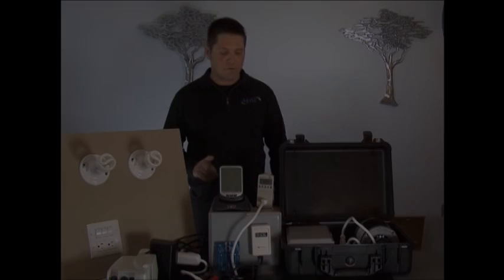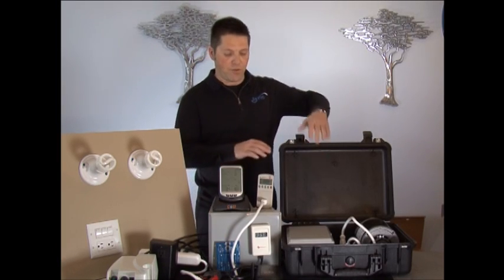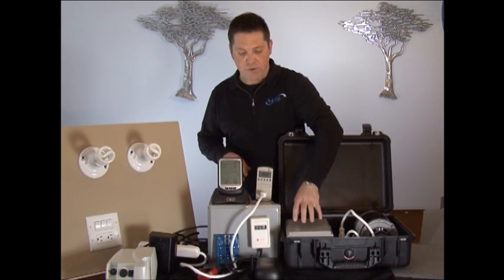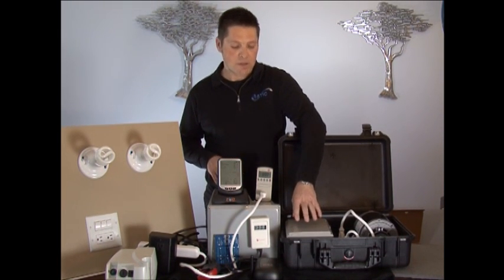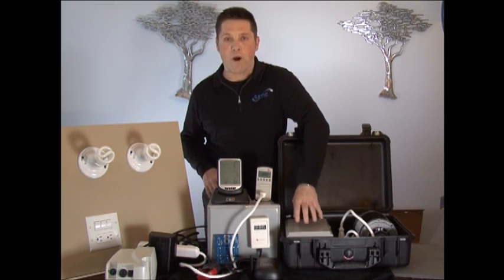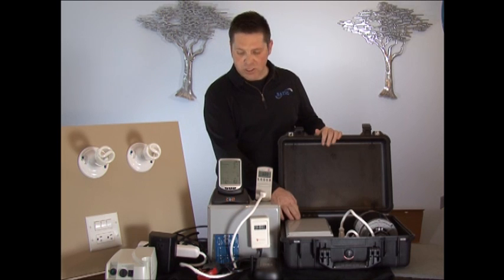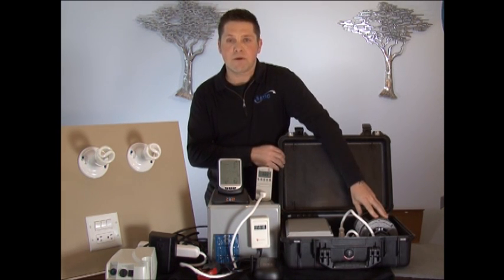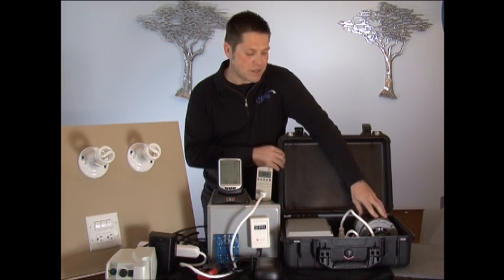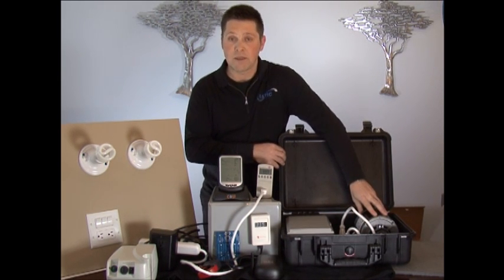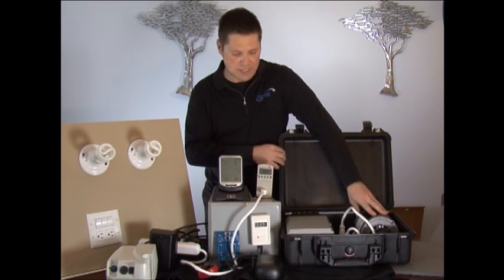The first product that we're going to demonstrate through the meter setup is what we would standardly call the SATIC Energy Saver Power Perfect wiring product. For this demonstration, we have a 5-amp motor, very commonly used in air conditioners. It's a very common air conditioner motor that would actually run the compressor for this test.